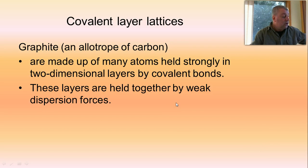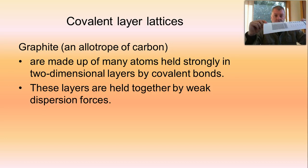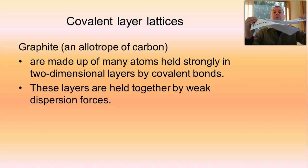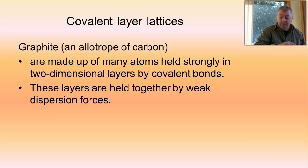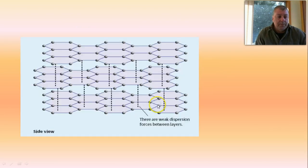An analogy I use is a piece of paper, where the paper itself represents the layer with the covalent bonds, which is fairly strong. Then you have another piece of paper with covalent bonds in it, but the pieces of paper can move and freely separate. It's also like the pages in a book. Let's have a look at what that's trying to represent.